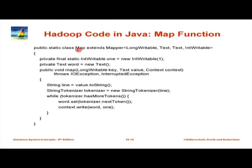Let us look at the map class which extends the mapper interface. It takes four types: LongWritable (the offset in the file), Text (a single line as input value), Text (the output key, which is the word), and IntWritable (the count of that word). This class has a final static IntWritable variable called 'one' which is a new IntWritable of one — this is an optimization so that it does not keep creating new objects of type IntWritable each time. It uses the same object many times.